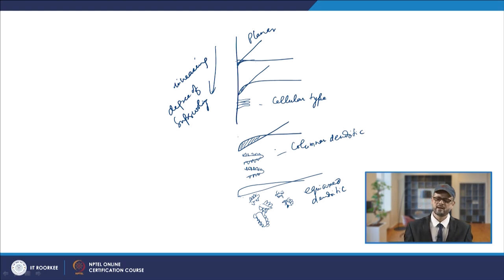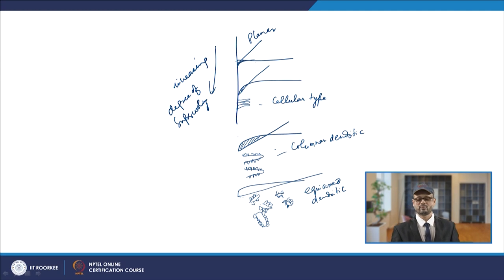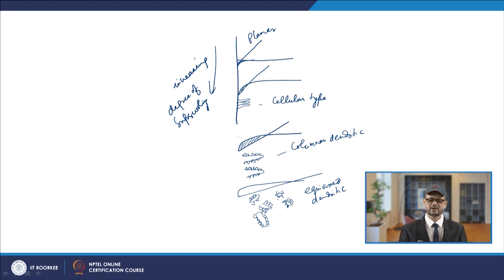When the undercooling is large enough to provide random nucleation, you get the equiaxed dendritic structure — dendrites not oriented in one particular direction but growing in all directions with an equiaxed form. Basically, based upon the temperature gradient and the constitutional undercooling, these dendritic structures form in alloys. Thank you very much.